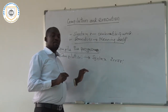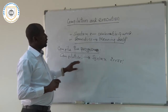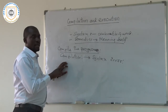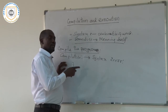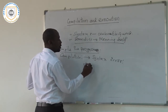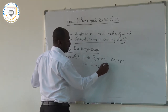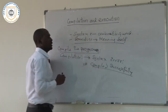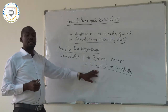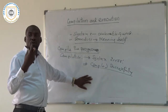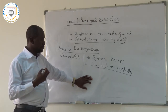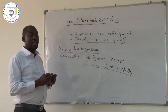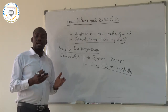If you compile a program and you find that there is a syntax error, what you need to do is to go back to your program and try to rectify those errors. Then compile it again until it gives you the message that the program compiled successfully. This means that now in your program there is no syntax error.